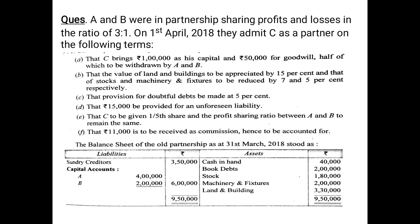The question says A and B were in partnership sharing profits and losses in the ratio of 3:1. On 1st April 2018, they admit C as a partner on the following terms and conditions.